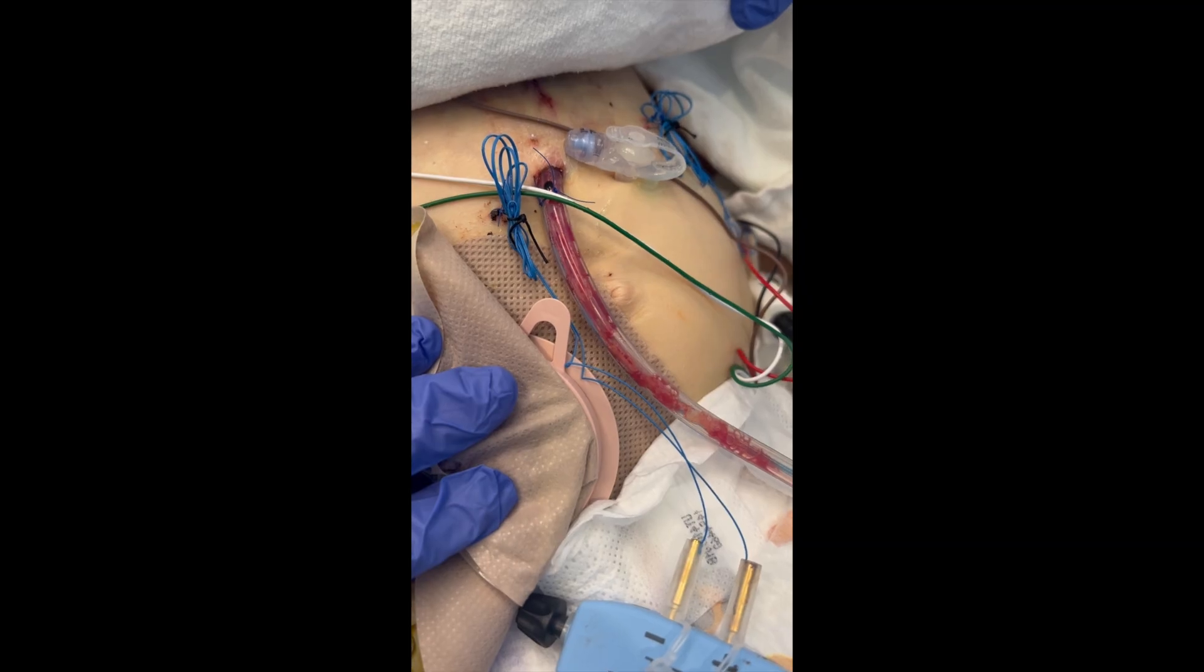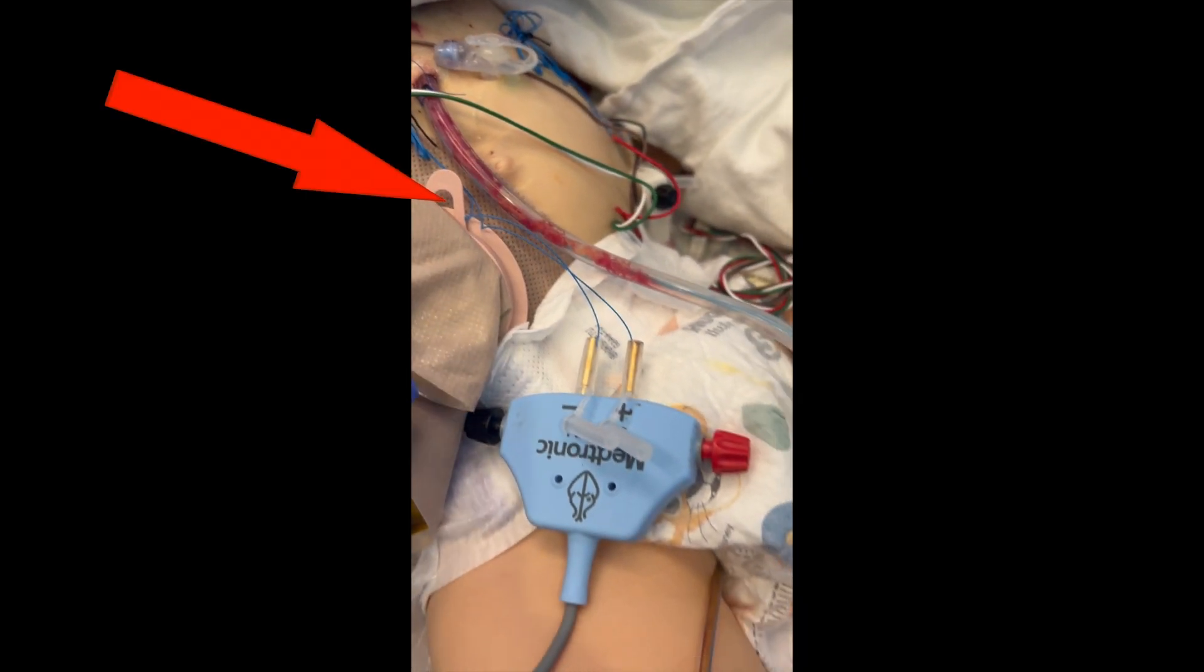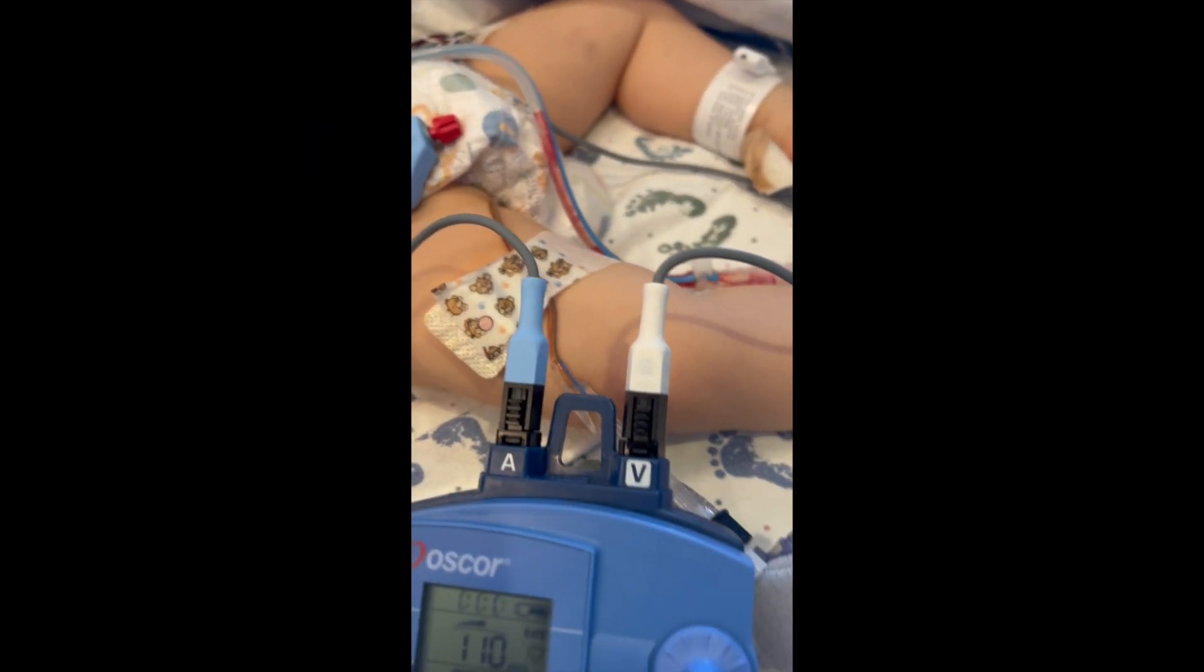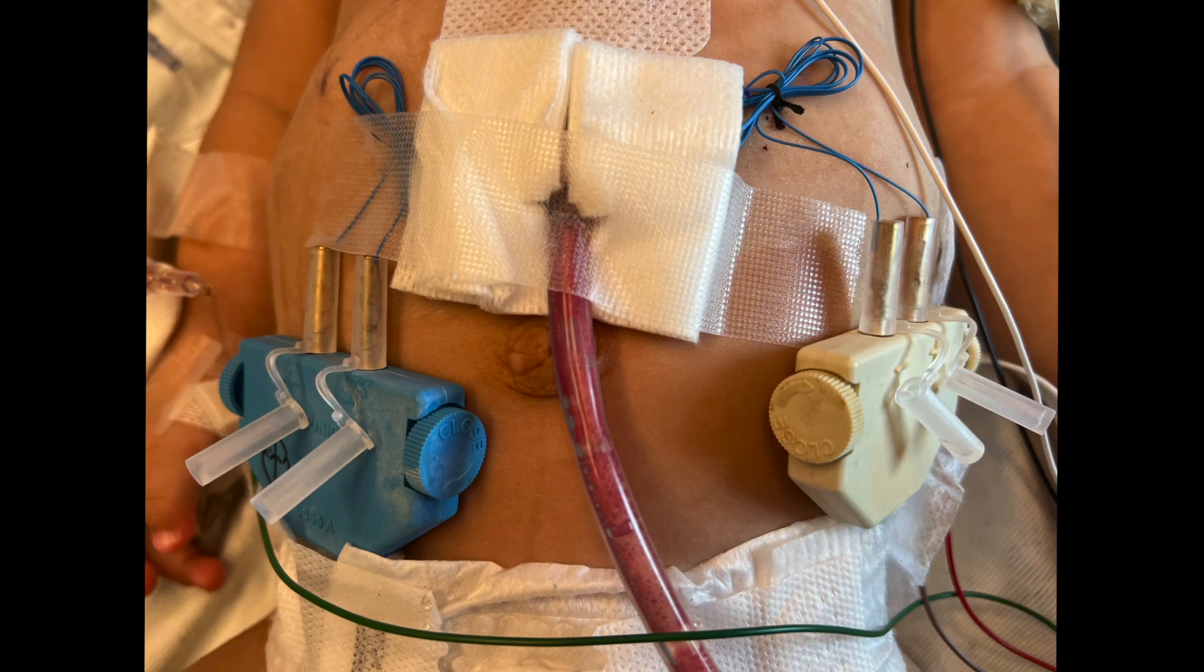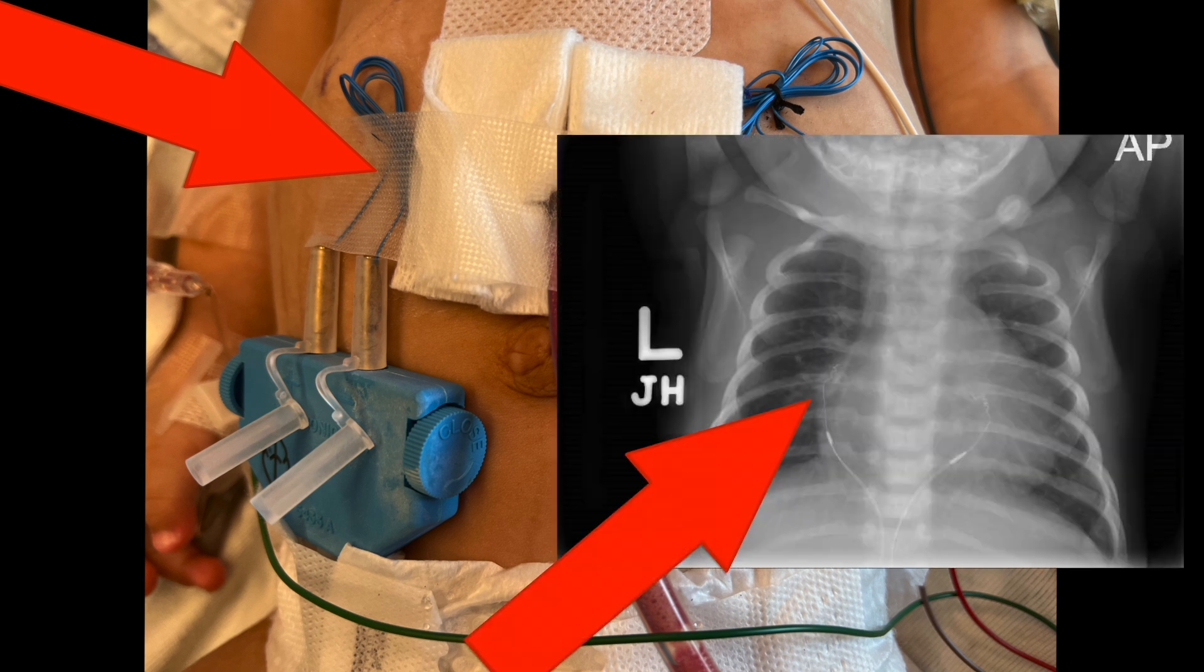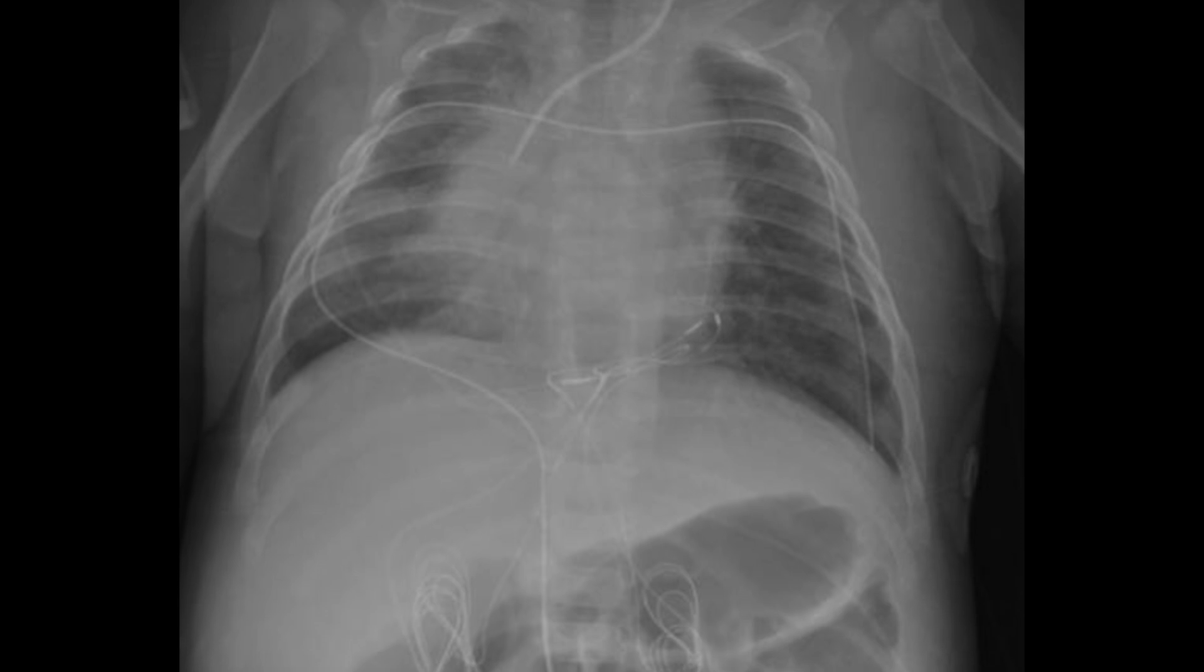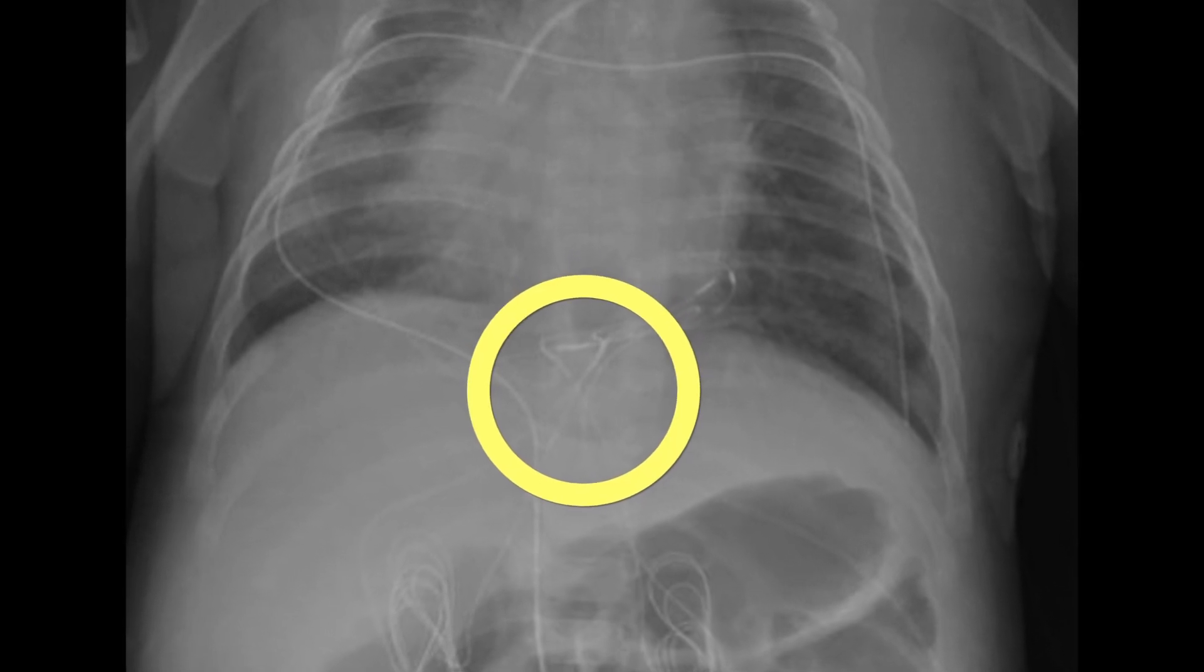To rapid atrial pace, first trace the atrial wires from the patient to the box to make sure everything is hooked up correctly. The atrial wires will always exit the body on the patient's right side. Even when the heart is backwards, the surgeons will cross the wires internally so that the atrial wires exit to the right.